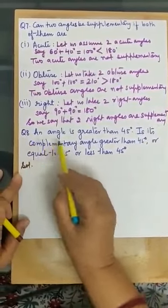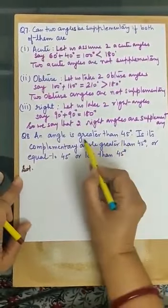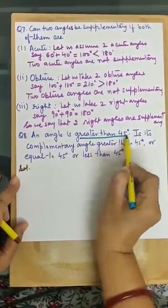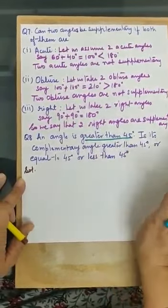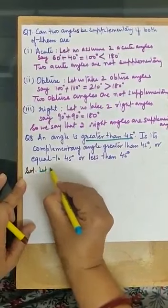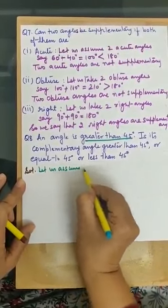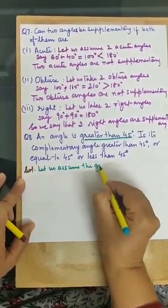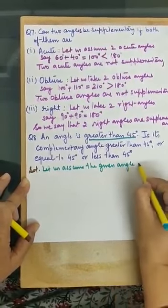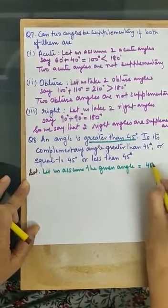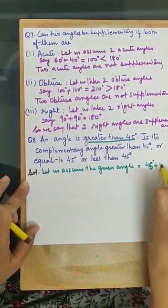Question number 8. An angle is greater than 45 degrees — it is not 45, it is more than 45. So let us assume the given angle equal to 45 plus x.